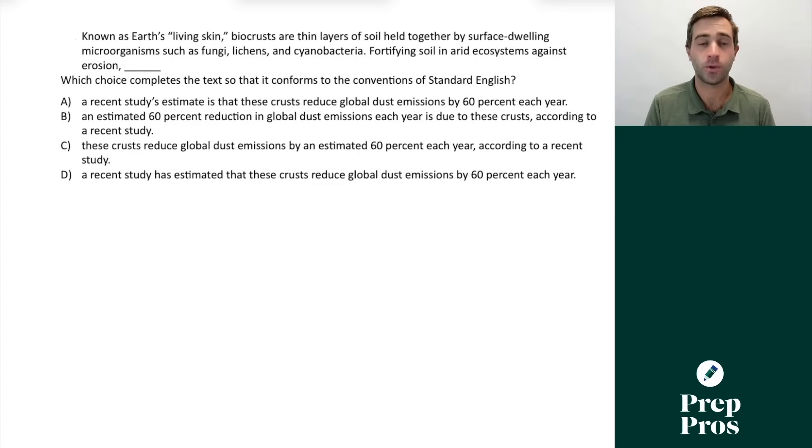Now the last concept that we're going to cover here that you will see on your June SAT are called misplaced modifiers. And then I'm going to talk about some recommendations of things that you should do to help you improve your score as much as possible heading into the June digital SAT. So here we see known as earth's living skin, biocrusts are thin layers of soil held together by surface dwelling microorganisms such as fungi, lichens, and cyanobacteria. Fortifying soil and arid ecosystems against erosion. Well here's our modifier. So whatever comes after it needs to be described as who or what could be fortifying soil and arid ecosystems against erosion.